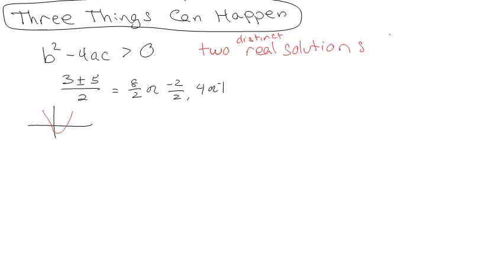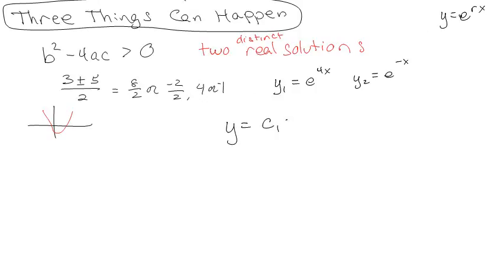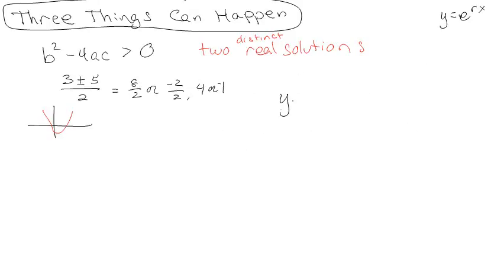If I have two distinct real solutions — remember a long time ago I guessed e^(rx) — one solution would be e^(4x) and another would be e^(−x). And since the solution is a linear combination of those two, we write y = c1·e^(4x) + c2·e^(−x). That's the first thing that can happen.